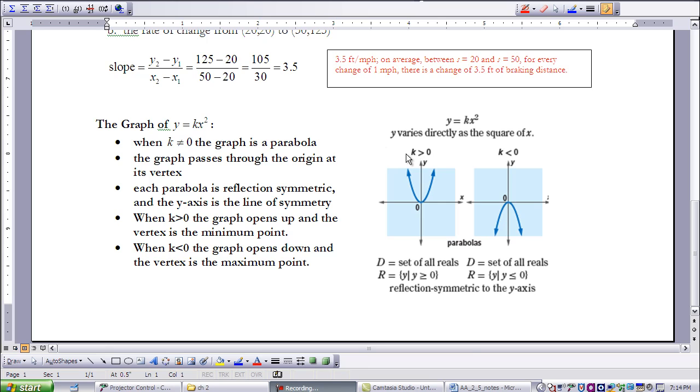When we look specifically at the graph, when k is greater than 0 and the graph opens upward, we evaluate our domain. Once again, our domain, there is no restriction looking at the horizontal x-axis here. There is no place that that parabola is not going to go horizontally. But if we look at it vertically, our graph is only in quadrants 1 and 2. So we say that the range, then, is a set of all values greater than or equal to 0. We want to make sure to include 0 because it goes through the origin, but it's always positive value. So we say it's greater than or equal to 0.